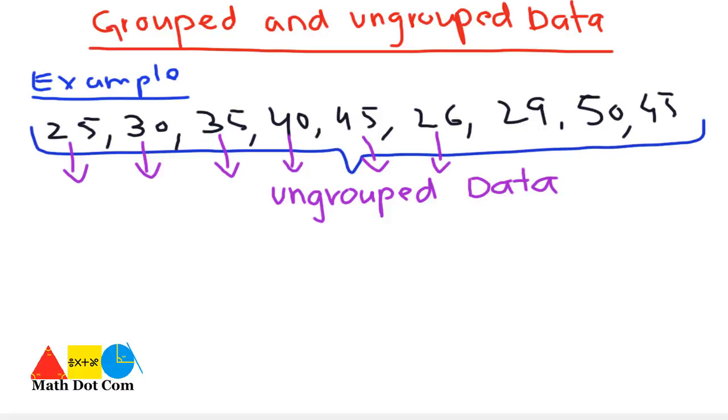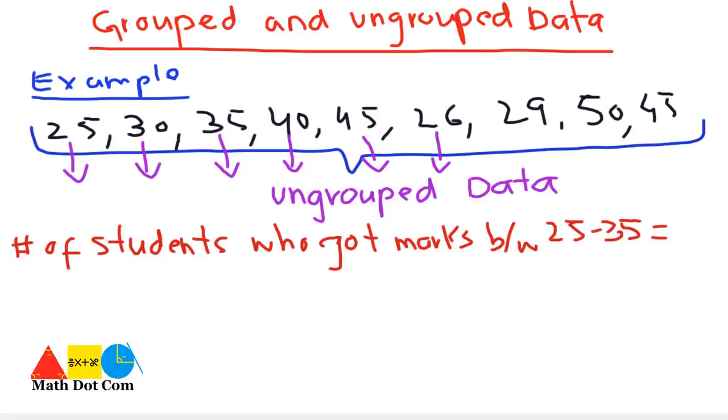When you organize this data in the form of groups, you may write the number of students who got marks between 25 and 35. Let's see how many: 1, 2, 3, 4, 5. There are 5 students that have got marks between 25 and 35.